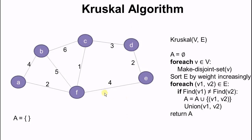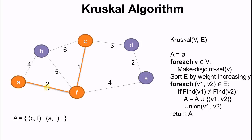Now let's use this example graph to walk through the algorithm. First we take the edge with the smallest weight, which is CF. Since C and F do not belong to the same disjoint set, we go ahead and merge them and push the edge into A. Next is AF, which has a weight of 2. A and F do not belong to the same disjoint set, so we merge them and push into A. Next is DE — DE do not belong to the same disjoint set, so we merge and push to A.